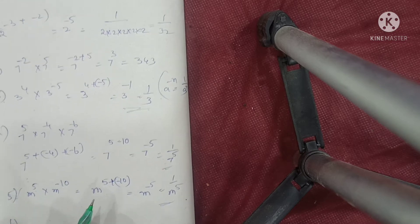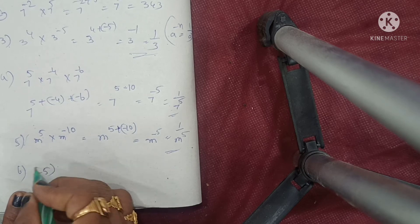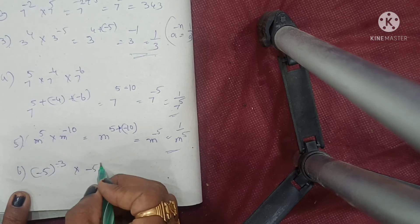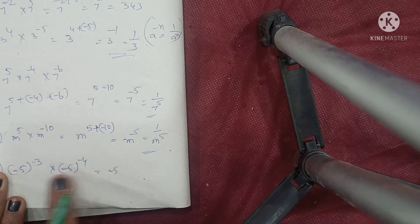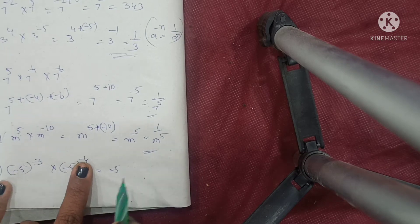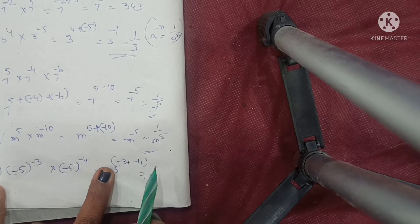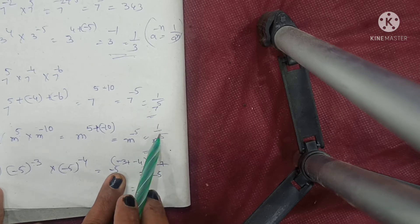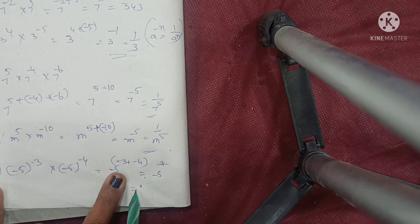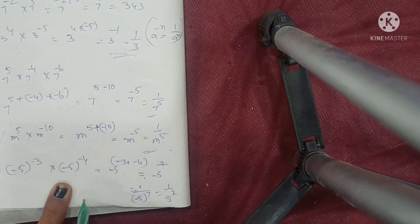Next, last one: minus 5 power of minus 3 into minus 5 power of minus 4. How to do this one? Minus 5 is the base in both pieces. The exponent is minus 3 plus minus 4, which means minus 5 power of minus 7. Converting: 1 by minus 5 to the power of 7, which means 1 by 5 power of 7. Simple.